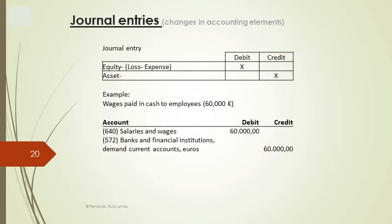When a company monthly pays workforce wages, in the journal ledger we must write down a journal entry which debits the personnel expenses, since it is a decrease in equity. The counterpart is a decrease in assets — we credit a cash account.